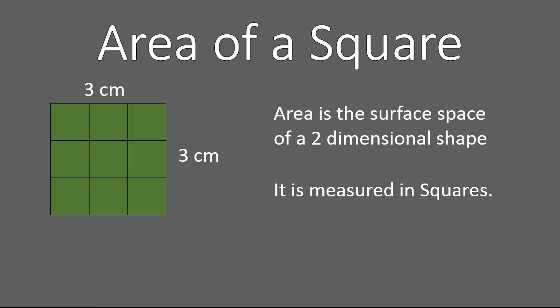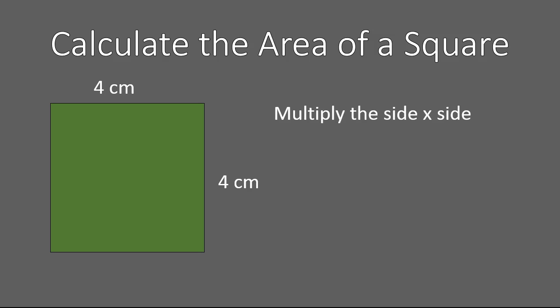Some of you might have noticed something about those numbers — three and nine. Maybe you noticed that to calculate the area of a square, you multiply the sides. The area is the side to the power of two. The side being raised to the power of two is often called the side squared. When we raise something to the power of two, it's called squaring, and that's why.